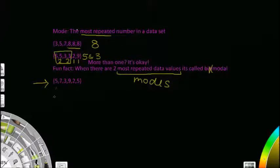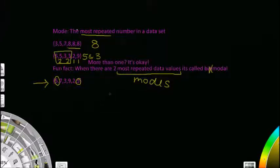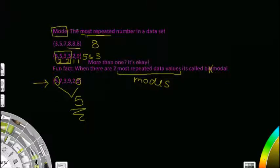Let's do one more example. We have one 5, one 7, one 3, one 9, one 2, and one 5 — wait, 5 appears twice! Test questions may trick you this way because the numbers may not be in numerical order, so a good idea is to rewrite them in order. That also helps with median. So there are two 5s, therefore the mode is 5. Mode is really easy — just remember the most repeated number.